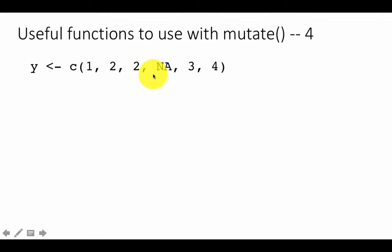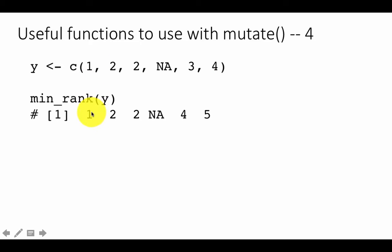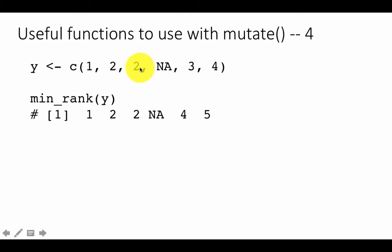There is also a function for ranking. Given data 1, 2, 2, NA, 3, 4, if you apply min_rank, you get the rank of each element as if ordered. So 1 is the smallest, rank 1; 2 is the second smallest, rank 2; the duplicate 2 also gets rank 2 — that is the minimum possible rank. NA has no rank and comes out as NA. Then 3 gets rank 4 because two positions were consumed by the duplicate 2, and 4 gets rank 5.